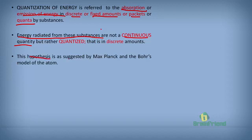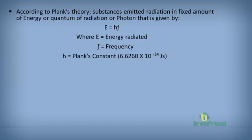This hypothesis was suggested by Max Planck and Bohr's model of the atom. According to Planck's theory, substances emit radiation in fixed amounts of energy, or quanta of radiation. The relationship between the emission of energy by substances is given by E equals HF, where E is the energy radiated and F is the frequency of the radiation. H is Planck's constant, with a fixed value of 6.6260 times 10 to the power minus 34 joules per second.